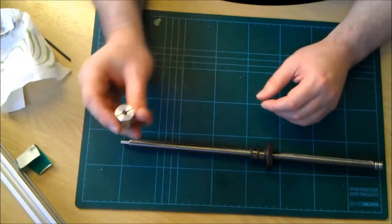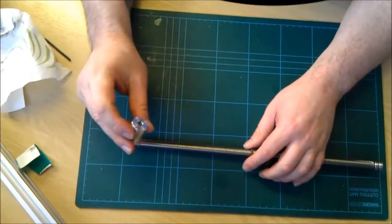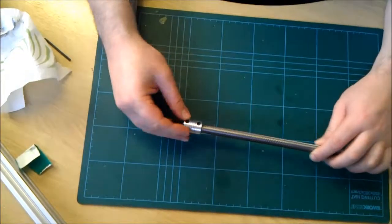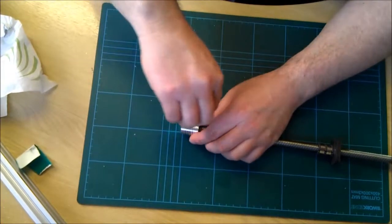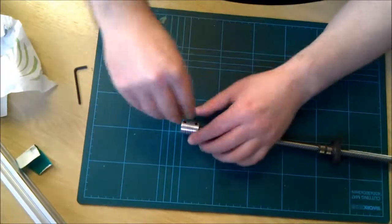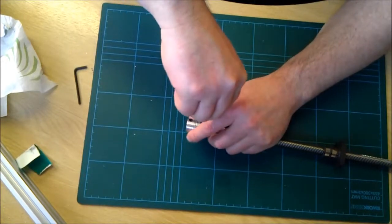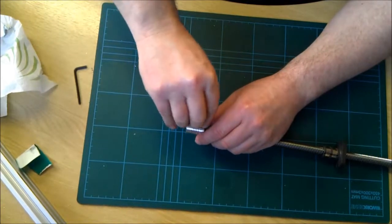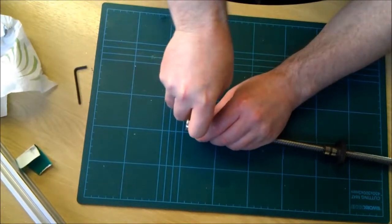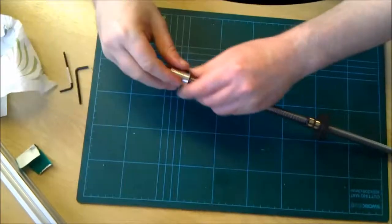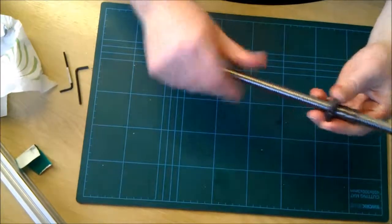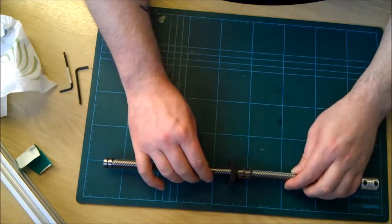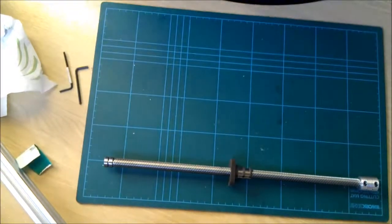Now take your flexi-coupling, obviously 6.35mm hole this side. Plonk it on and tighten. There it goes. Okay. That's the piece assembled. Okay. Now, put that to one side for a second.